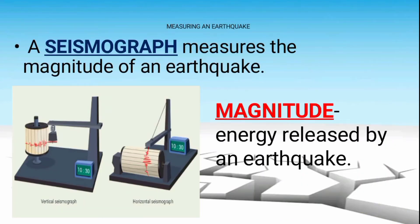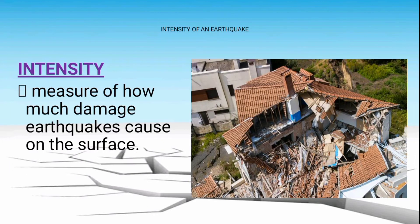What is a seismograph and magnitude? When we say seismograph, it measures the magnitude of an earthquake. When we say magnitude, it is the energy released by an earthquake. Intensity, on the other hand, is the measure of how much damage earthquakes cause on the surface.